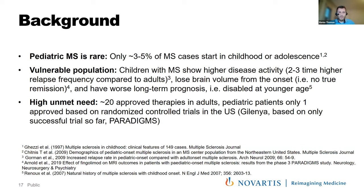There is a higher need for treatment in this area. In adult MS we now have around 20 approved disease-modifying therapies, while in pediatric patients there is only one approved worldwide based on a randomized controlled trial — fingolimod (Gilenya), based on the PARADIGMS study. There was recently another approval with ofatumumab in the EU only. There clearly remains a high unmet need for new treatment options for these patients.